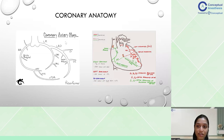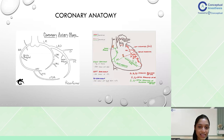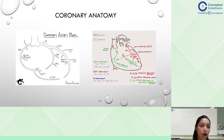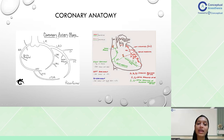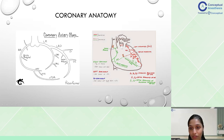Now let's look at the coronary anatomy. There are two ostia of the aorta — the left coronary ostium and the right. From the left originates the left main, which bifurcates into the LAD and the LCX. The branches of the LCX include OM1 and OM2. The LAD has septal perforators and diagonal branches. The RCA has one acute marginal branch, one posterior left ventricular branch, and one PDA — posterior descending artery.